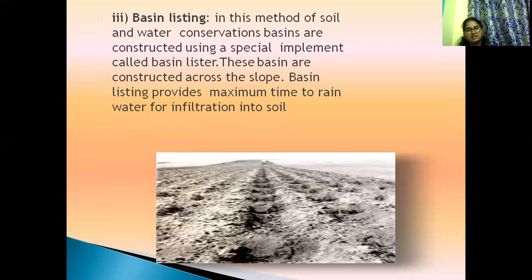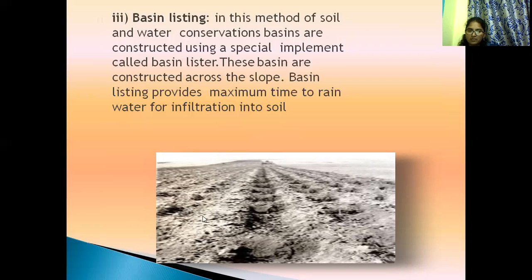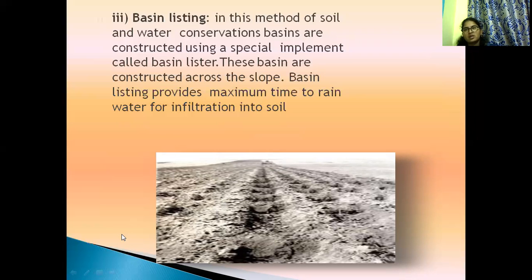Another method for soil conservation is basin listing. The basin provides maximum time to rainwater for infiltration into the soil. Runoff losses are reduced row by row, conserving the water and allowing infiltration into the soil, so soil moisture capability is increased. In this method, soil and water conservation basins are constructed using special implements.